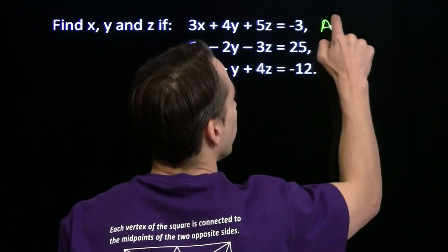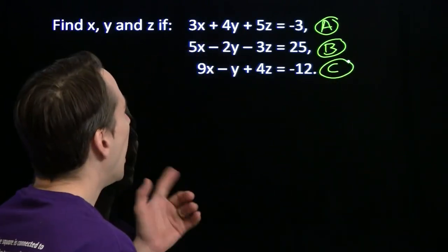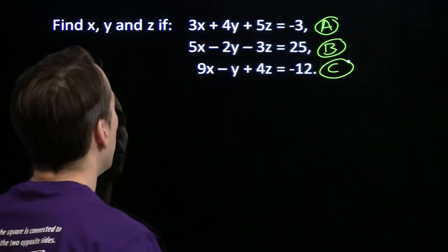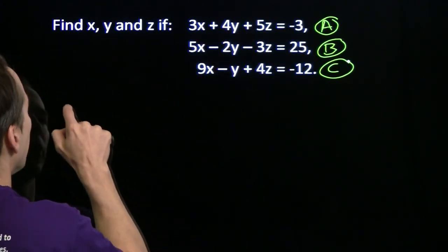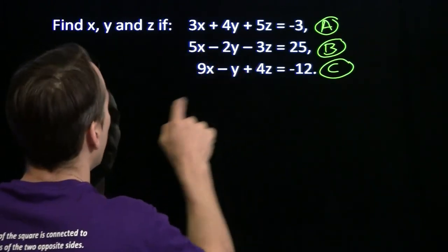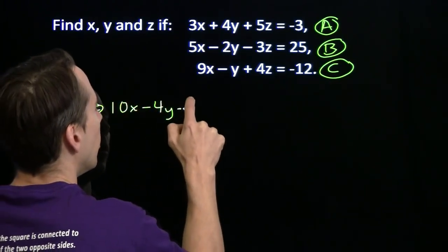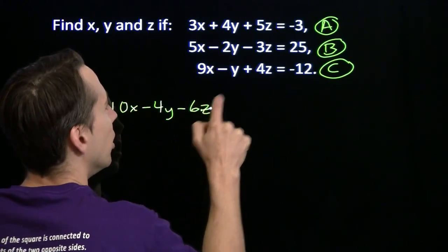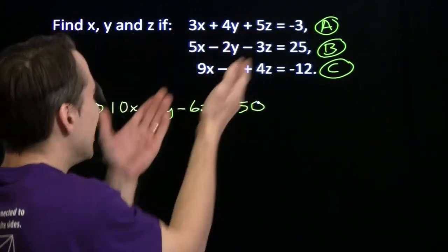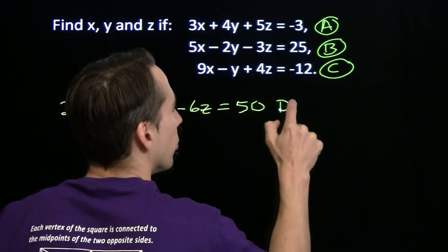First I'm going to letter these equations A, B, and C so I can talk about them. I'm going to start off by multiplying equation B by two, and that's going to set up an elimination of y with equation A. So our first step is multiply equation B by two, and we'll get 10x minus 4y minus 6z is 50.